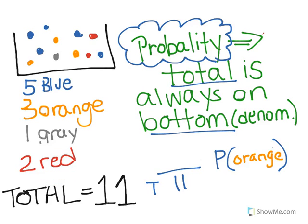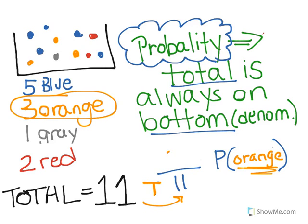If we wanted to change the color and talk about orange — notice how the total is still on the bottom, still 11, it hasn't changed. There are three orange in the box, so just throw that number up top. The probability of picking an orange marble is 3 out of 11.